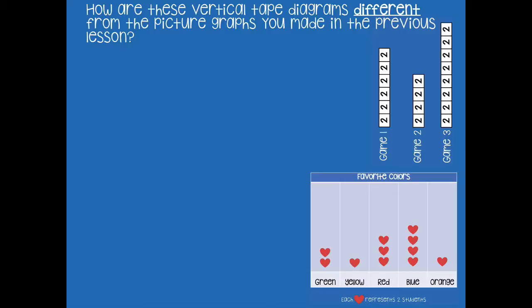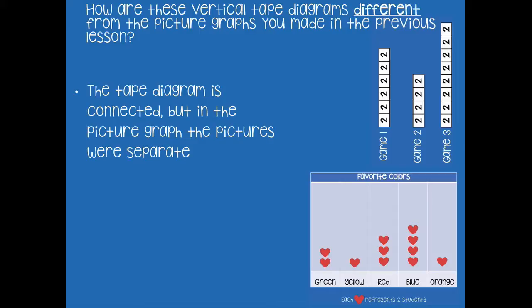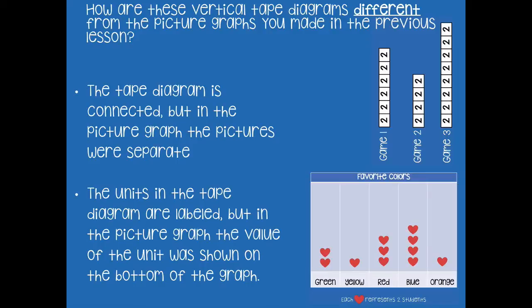Now think about how the vertical tape diagrams are different from picture graphs. One difference: the tape diagram is connected, but in the picture graph the pictures are separate from each other with space in between. Another difference: the units in the tape diagram are labeled with the value inside each unit, while in the picture graph the value is shown at the bottom as a key, not inside each picture.